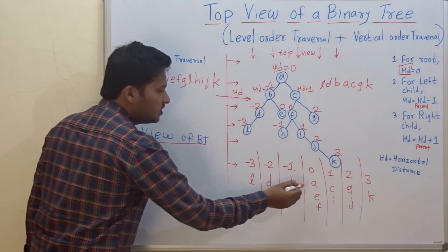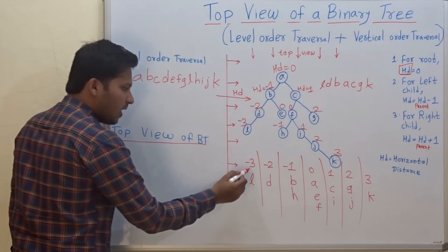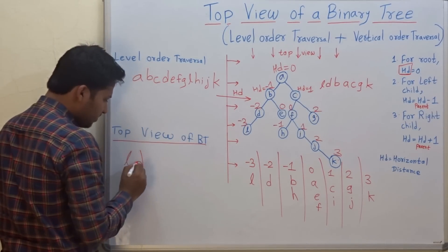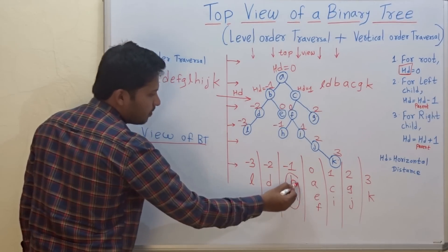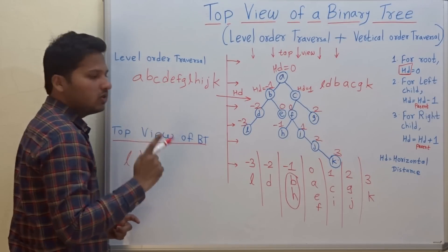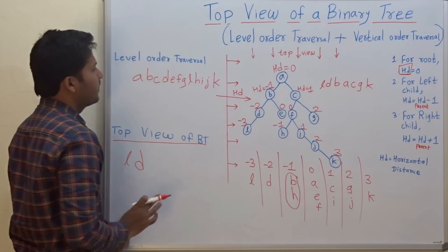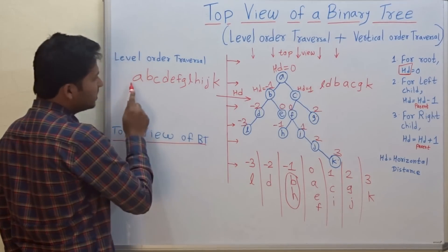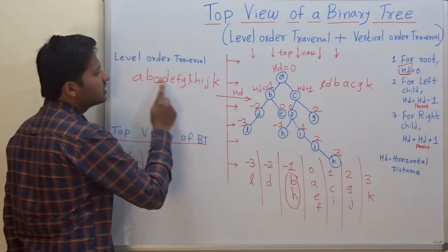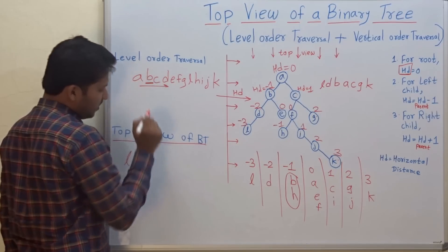A single node from each vertical line will appear in the top view. For minus 3, there is only one node, so L comes in the top view. For minus 2, there is only one node, so D comes in. For minus 1, there are two nodes: B and H. The node that appears first in the level order traversal comes in the top view — that is B. So B comes in the top view.